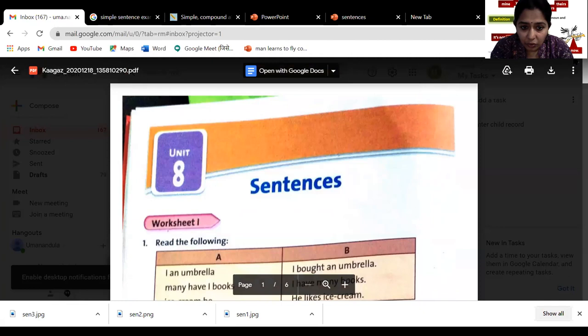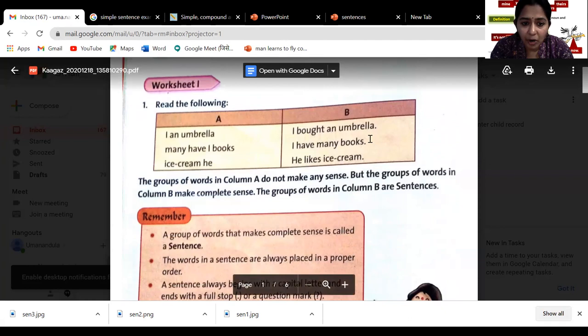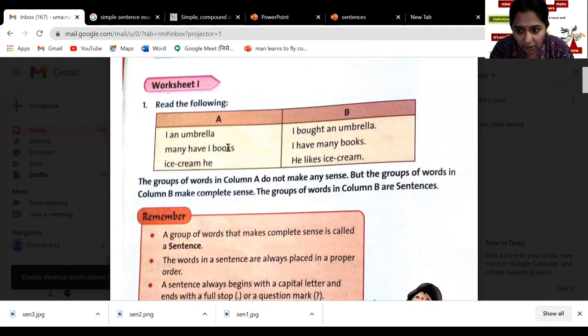Now coming to the practice book, I just showed you what are sentences. Here you can see in the box: 'I am umbrella', 'I bought an umbrella', 'many have I books', 'I have many books', 'ice cream he', 'he likes ice cream'. When you see 'I am umbrella', does it make sense children? No. But in this group you see 'I bought an umbrella', 'I have many books', 'he likes ice cream' - these are different kinds of sentences with lots of meaning.